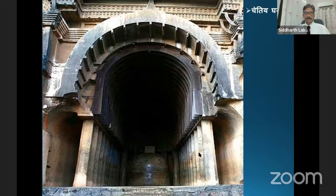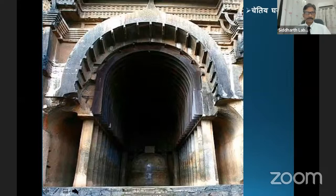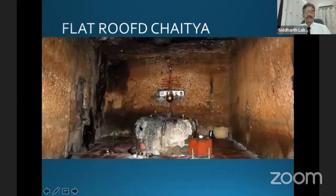We can see the circumambulation path here and we see the stupa. We will see the stupa separately. This is again the vaulted roof — very beautiful vaulted roof with the wooden ribs. And this is the flat roof of Chetiyagara — very small Chetiyagara with a very small monastery.